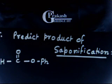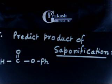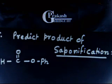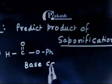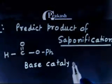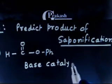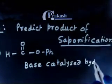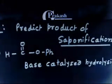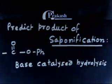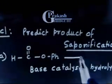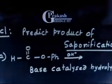This is the product of following an ester after saponification. Base-catalyzed hydrolysis of an ester is called saponification. So you have to write out the product — if this ester is treated with base OH⁻, it will give the hydrolysis product.